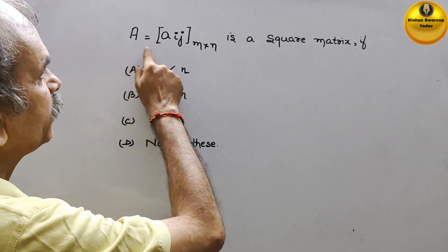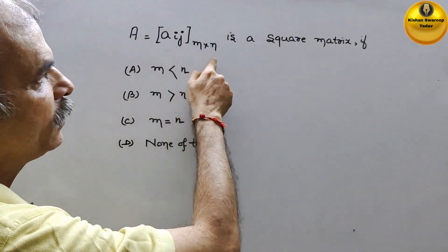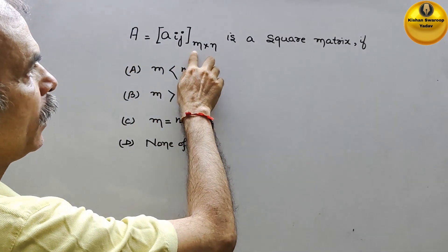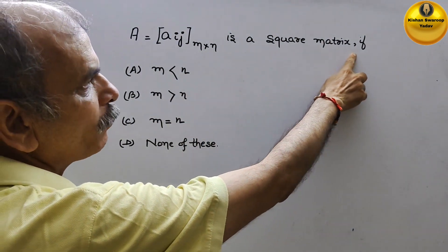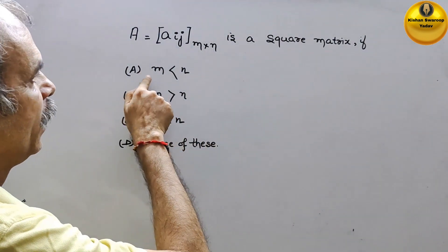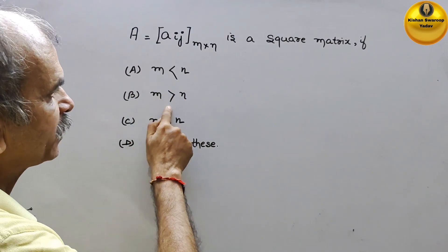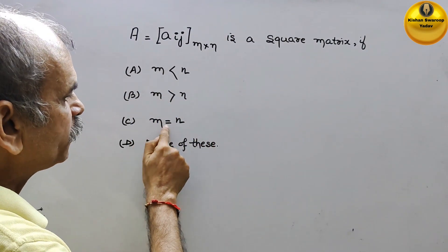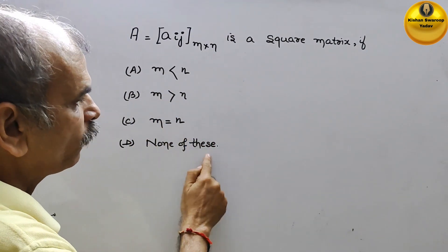Your question is, A is equal to Aig, that is your matrix, m into n is a square matrix if: m is less than n, m is greater than n, m is equal to n, or none of these.